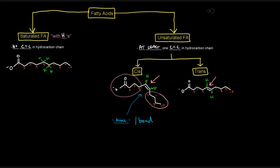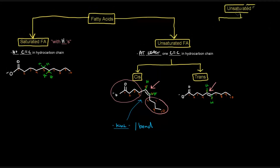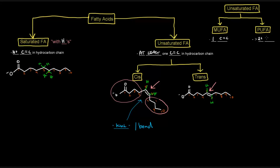Now, there's another way to divide up unsaturated fatty acids: MUFA and PUFA. Fun fact — MUFA was actually one of my nicknames growing up, and that's where the 'Mufa' in Mufi University comes from. The UFA portion stands for unsaturated fatty acid. The M refers to mono — meaning one — and the P is poly — meaning many. So a monounsaturated fatty acid has one carbon-carbon double bond in the chain, whereas polyunsaturated fatty acids have two or more carbon-carbon double bonds in their chain.